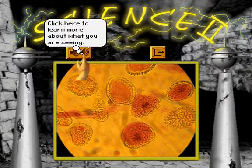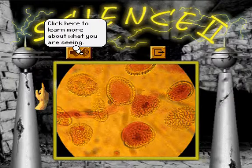We are looking at a bunch of pollen grains. Plants use pollen to reproduce. Bees carry pollen between plants and make honey from what the plants don't use.